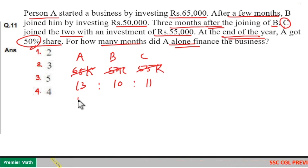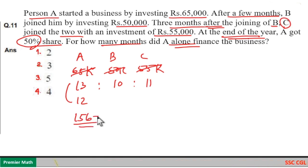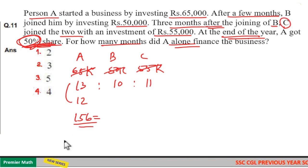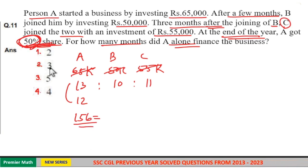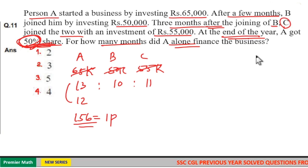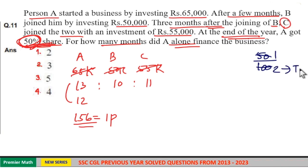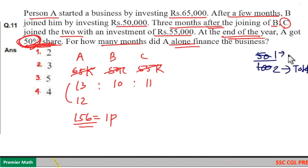A worked for 12 months, which means A's share is equal to 13 × 12 = 156. This 156 is half of the total share, i.e., 50% is A's share. This means if the total share is 2 parts, out of these 2 parts, 1 part is A's share. That is 50% means 50/100, which is 1/2. So if 2 parts is the total share, then 1 part is A's share.